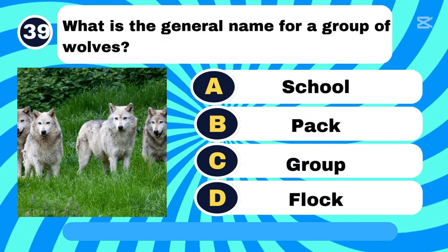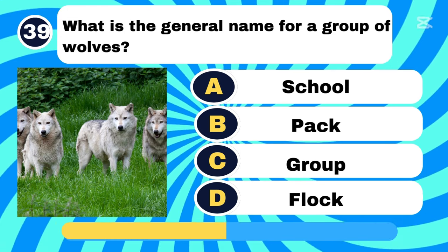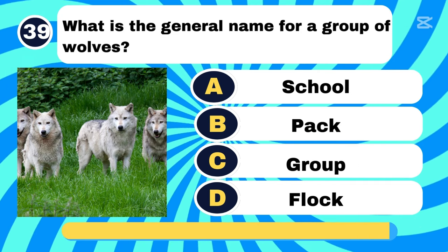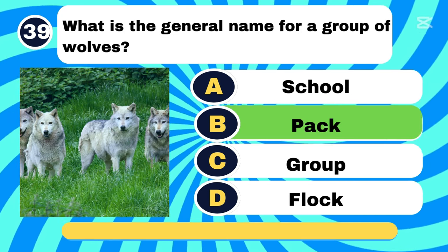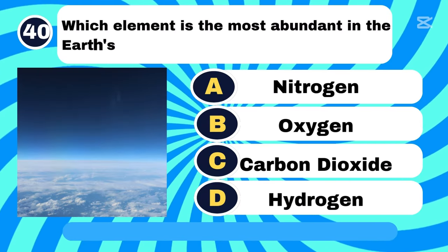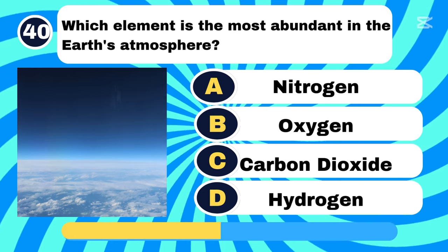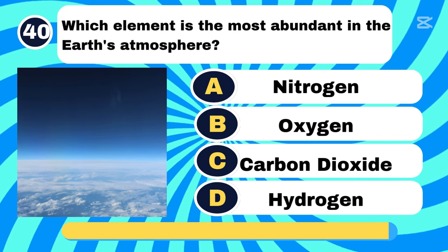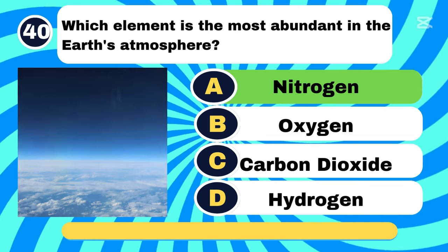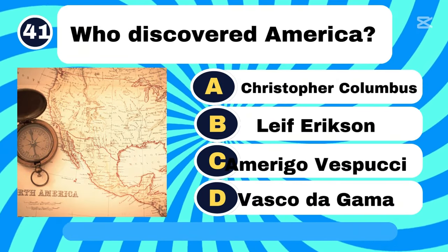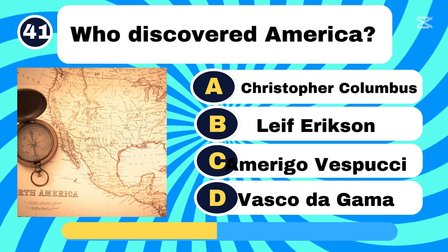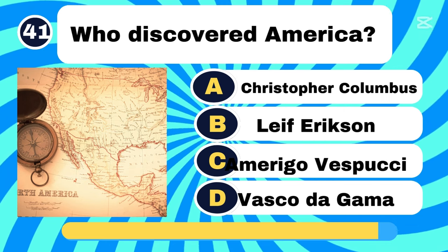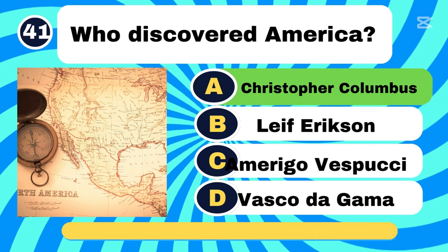What is the general name for a group of wolves? Letter C. Which element is the most abundant in the Earth's atmosphere? Letter A, Nitrogen. Who discovered America? Letter A, Christopher Columbus.